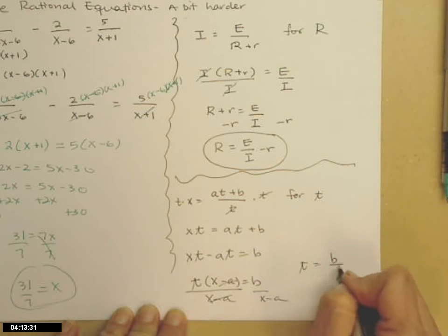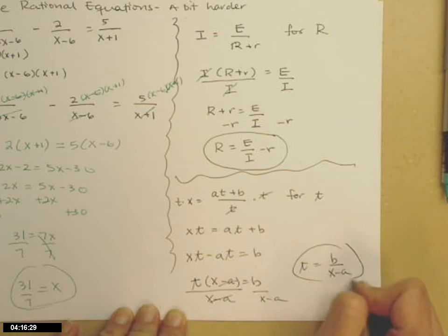t equals b over x minus a. It's important that the right hand side doesn't have any t's in it.